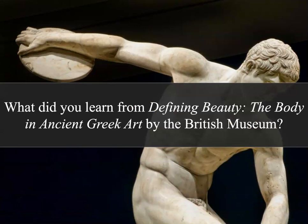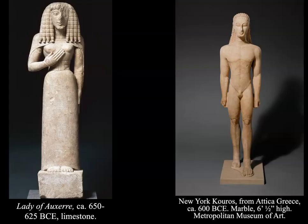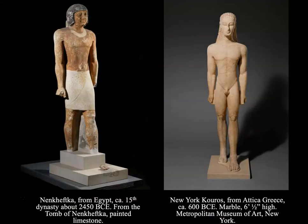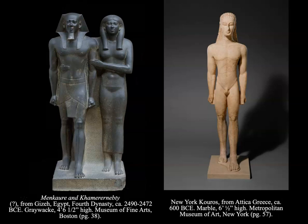We discussed 'Defining Beauty' this week, the British Museum article focusing on Greek sculpture and the influences of Egyptian sculpture on Greek sculpture. It's written by the British Museum, which is problematic in its own right. We investigated the connection between Greek sculpture like the New York Kouros and Egyptian sculpture, examining how the Greeks tried to reflect that style, imagery, and body movement.